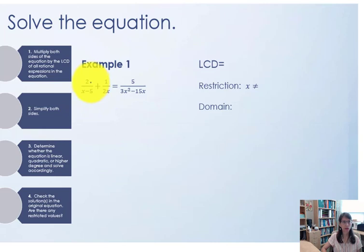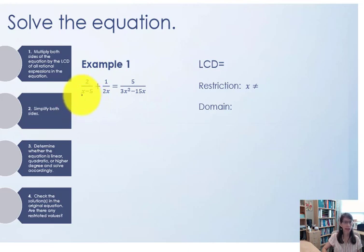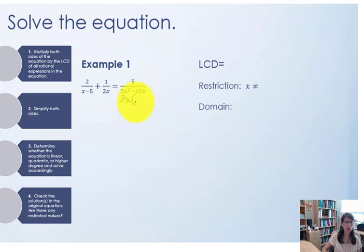In example one we have 2 divided by (x minus 5) plus 1 divided by 2x equals 5 divided by (3x squared minus 15x). We look at our denominators and make sure they are factored. x minus 5 is completely factored. 2x means 2 times x, that is completely factored. For 3x squared minus 15x, both terms share a greatest common factor of 3x, leaving (x minus 5).